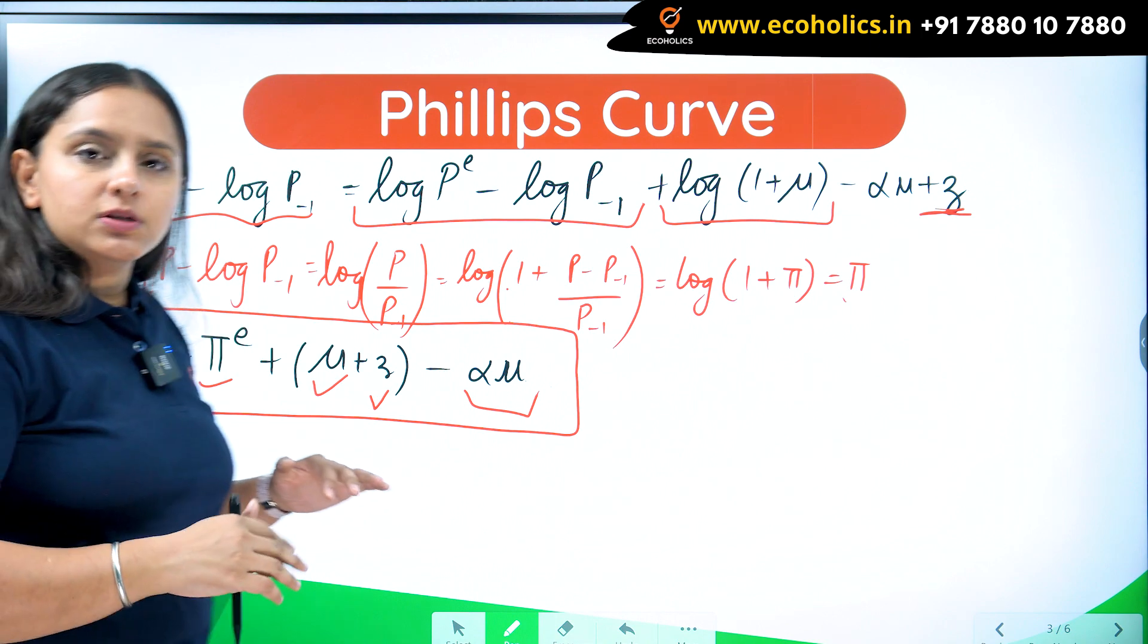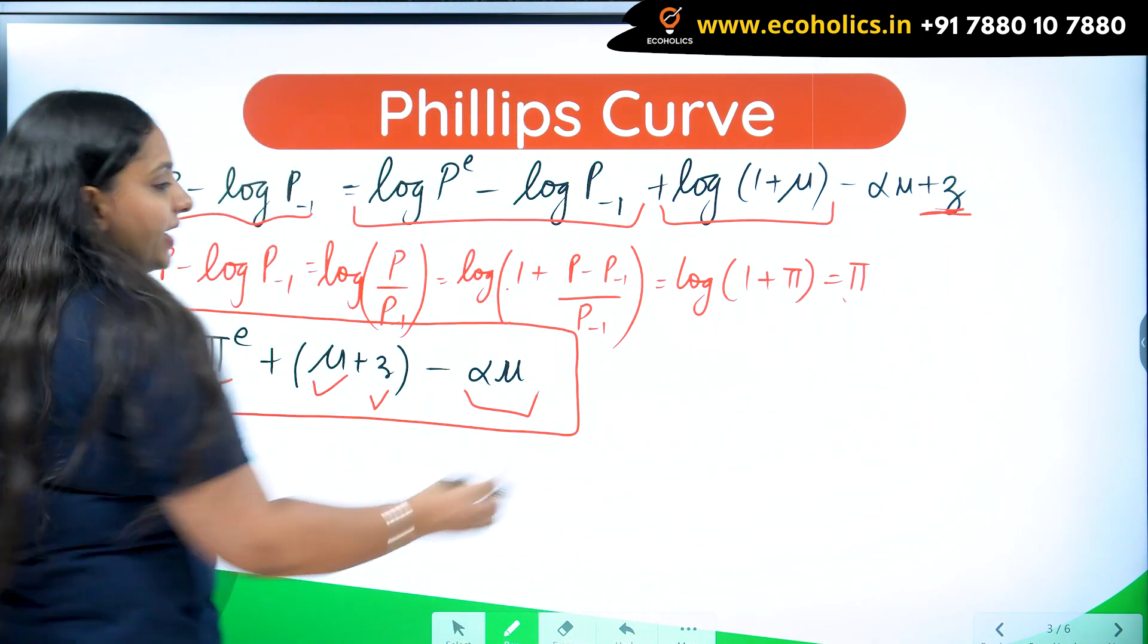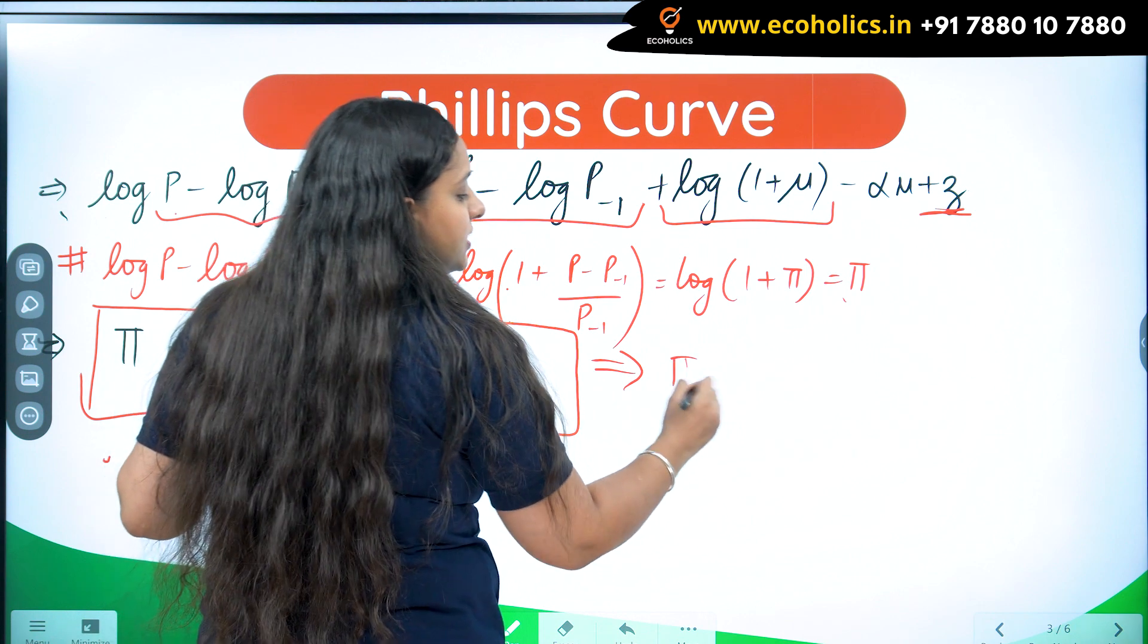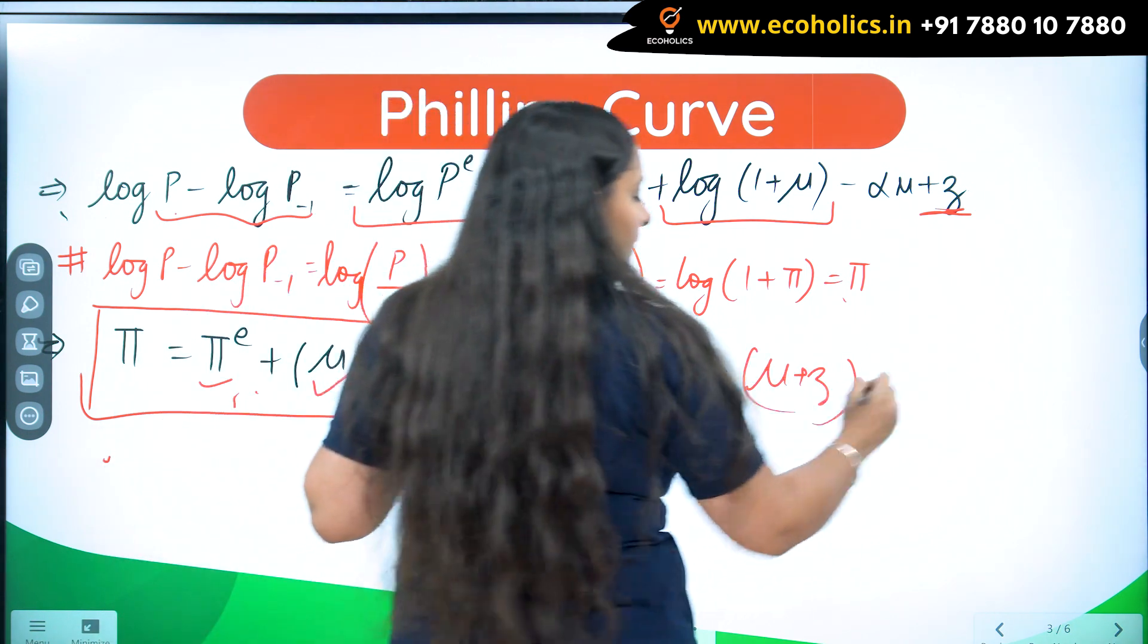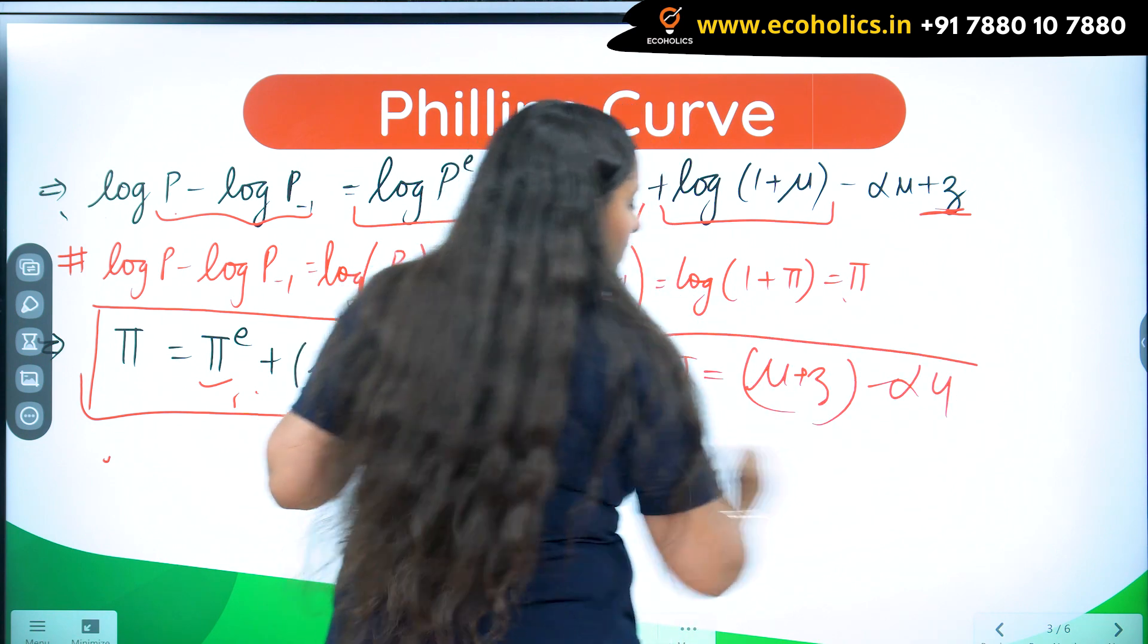Only when we do little changes to expected inflation, we will have different forms of Phillips curve. In original Phillips curve, the expected inflation is 0. If I make expected inflation 0, I will get this as my answer. This will be my Phillips curve.